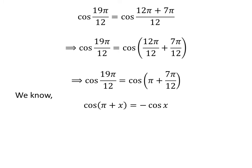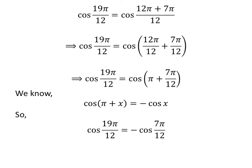We know the trigonometric identity cosine of pi plus x is equal to minus cosine of x. The proof of this identity is given in the video appearing in the upper right corner, and the link is also given in the description section. So, cosine of 19 times pi upon 12 is equal to minus cosine of 7 times pi upon 12.